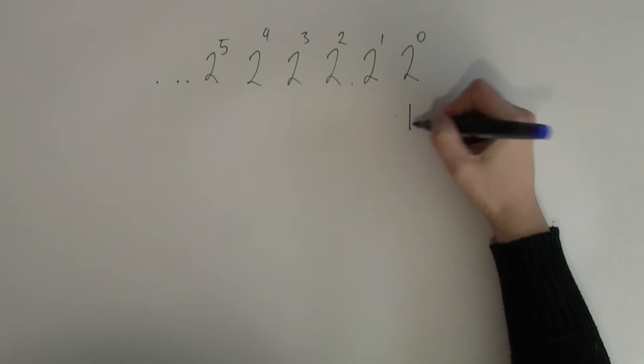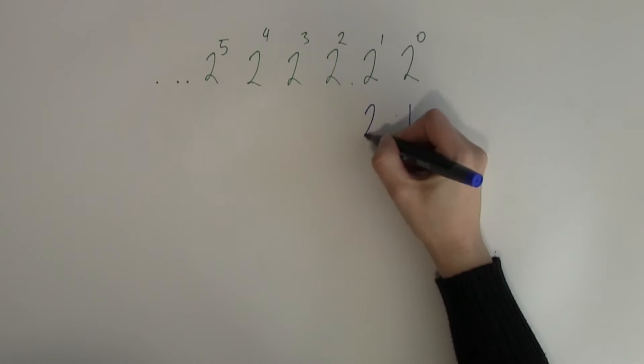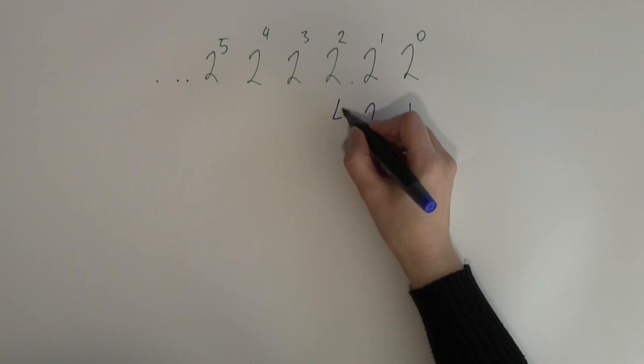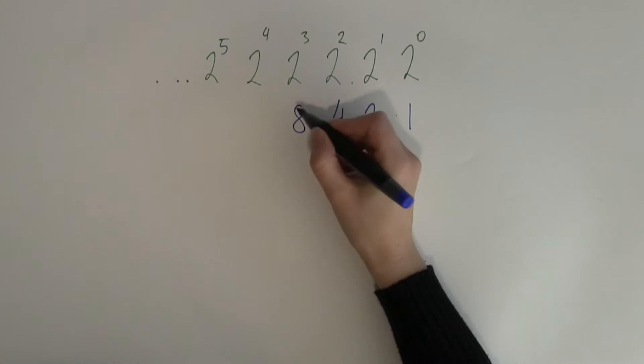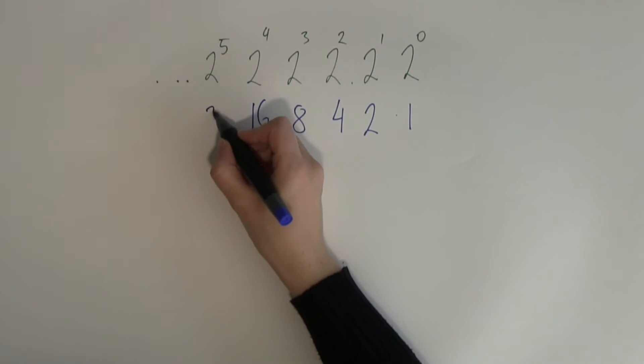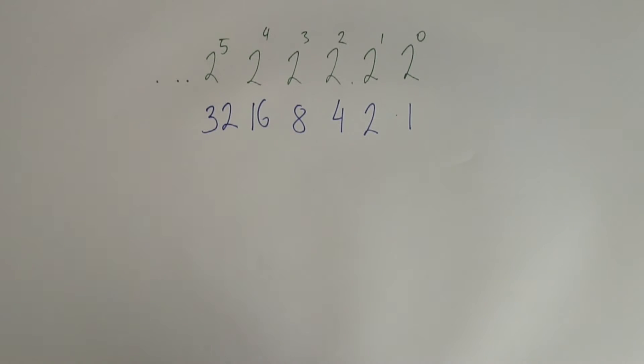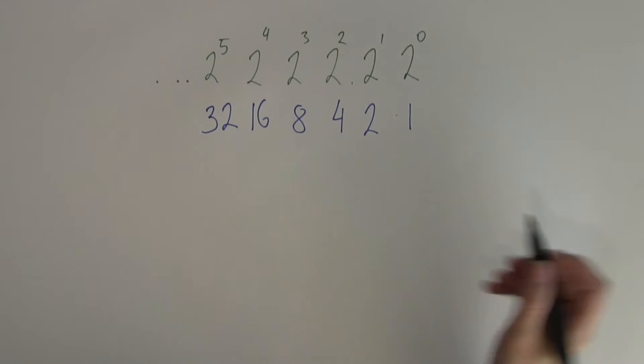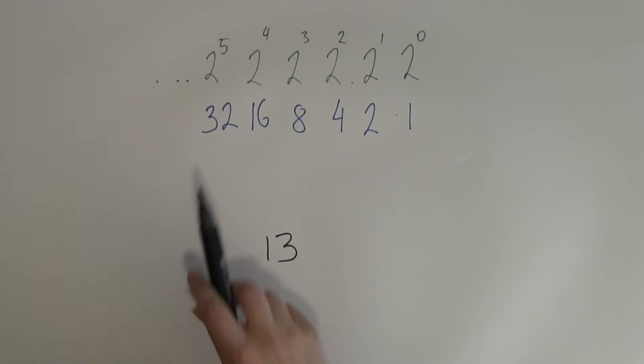2 to the power of 0 would be 1, 2 to the power of 1 would be 2, 2 to the power of 2 would be 4, 2 to the power of 3 is 8, 2 to the power of 4 is 16 and 2 to the power of 5 is 32. So, if I have got a decimal number such as 13, how am I going to use my knowledge of the place values to convert this number into binary?